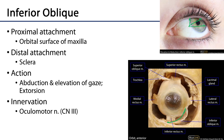One useful pattern to remember: the superior and inferior rectus muscles are adductors, while the oblique muscles are abductors — obliques abduct. Additionally, the superior rectus and superior oblique muscles lead to intorsion, whereas the inferior oblique and inferior rectus muscles lead to extorsion. The inferior oblique, like most other extraocular muscles, is innervated by the oculomotor nerve.